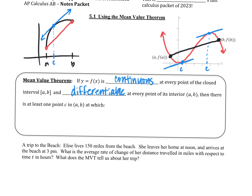Let me talk to you about why I put those where I did. We've got to be continuous everywhere on that interval, including the endpoints — because those are bracketed. And then differentiable everywhere within those two endpoints. So notice: continuous all the way to the ends, differentiable in the middle.